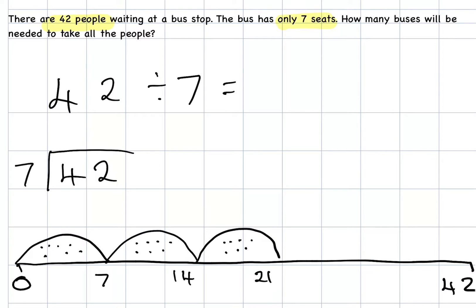We need to get all the way to 42, so we're still not there yet. We can still keep adding on more groups of 7. Another bus comes along, and it picks up another 7 people. 21 add 7 is 28. Another bus comes along, and it picks up another group of 7. 28 add 7 gives us 35. Then another bus comes along, and it picks up another group of 7. Actually, 35 add 7 gets us to 42.